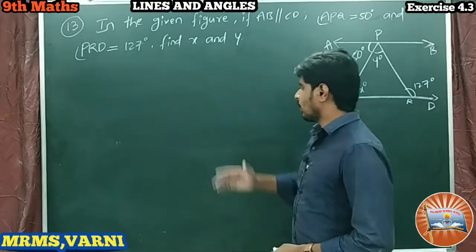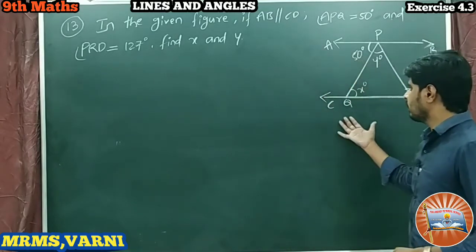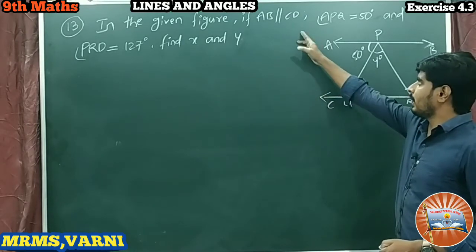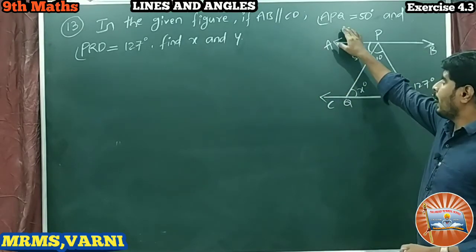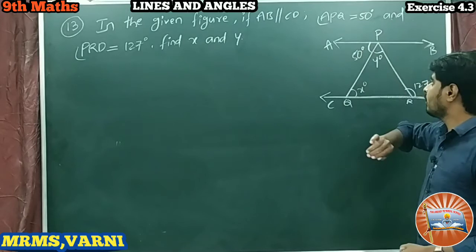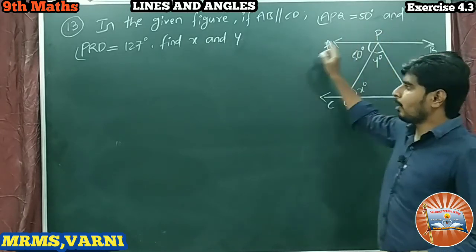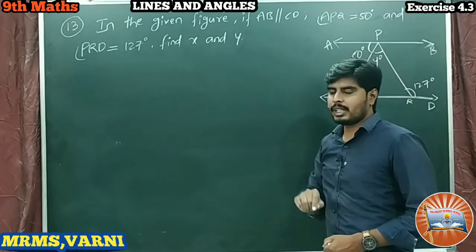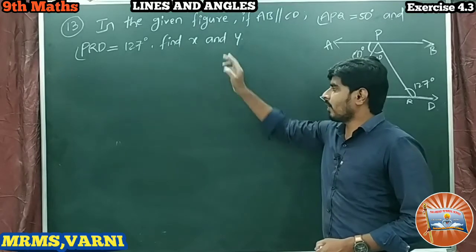This is the question given and this is the figure. In the given figure, AB is parallel to CD. Angle APQ is equal to 50 degrees, and angle PRD is equal to 127 degrees. Find X and Y values.